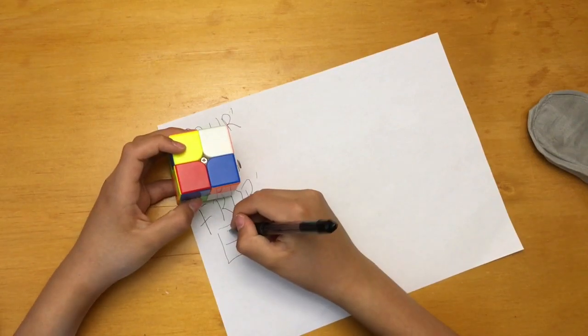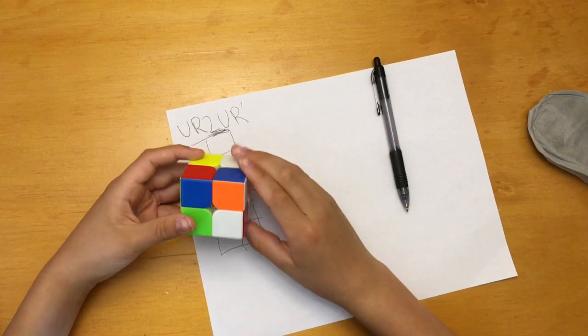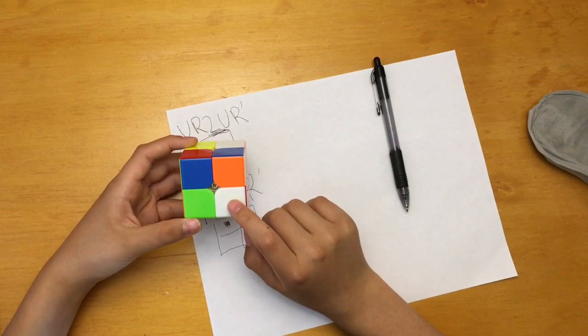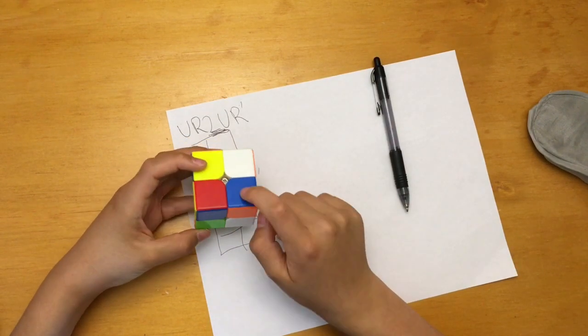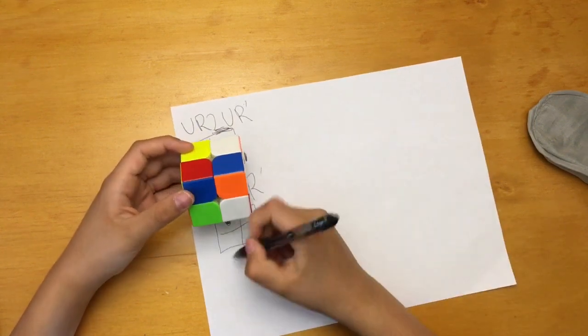Now let's track this one. So an F brings it to right here and then R U R' so it'll be right here.